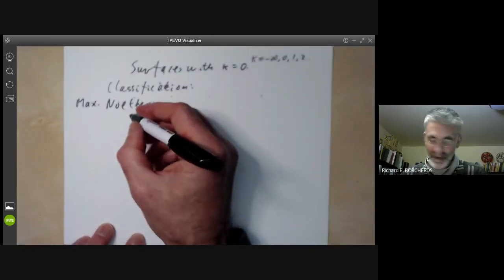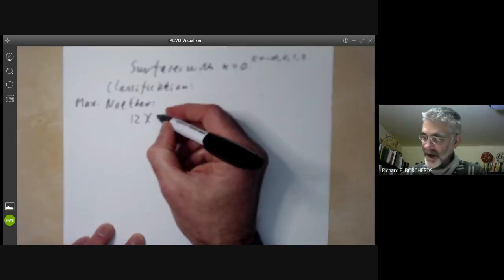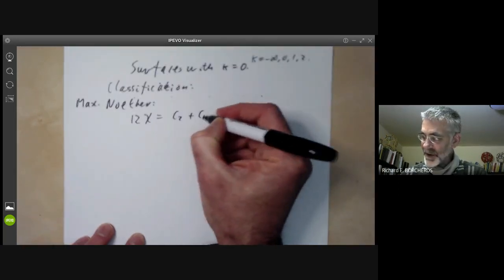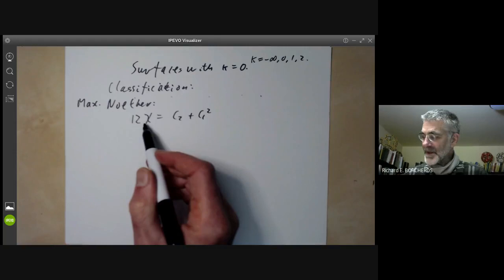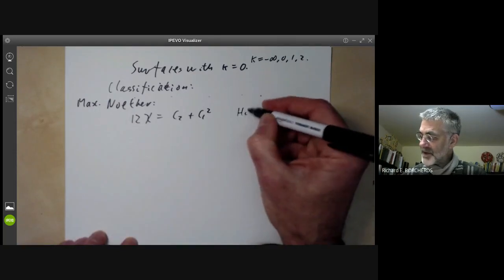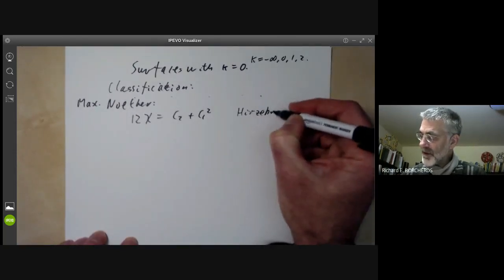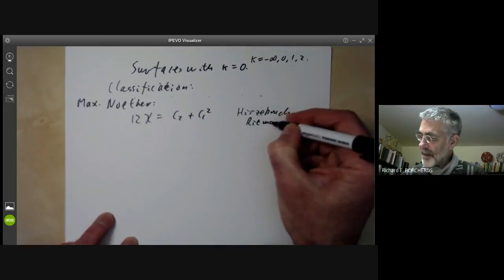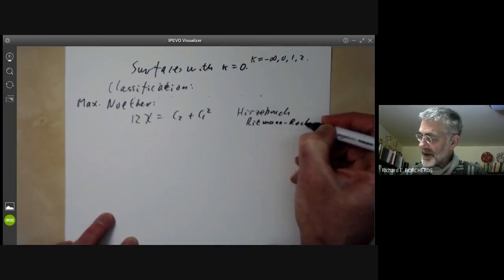Max Noether's formula says 12χ is equal to C₂ plus C₁ squared. This is actually a special case of the Hirzebruch-Riemann-Roch formula in higher dimensions.